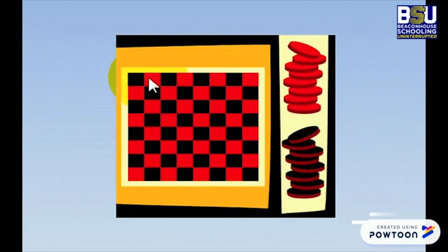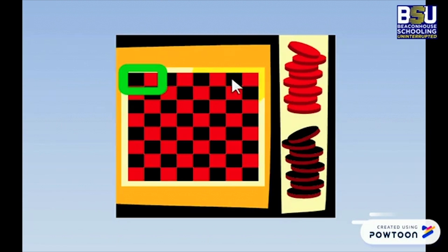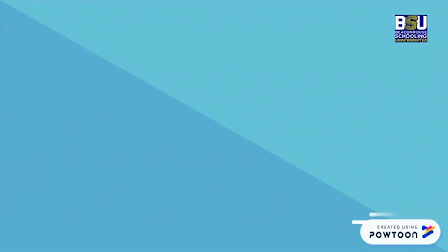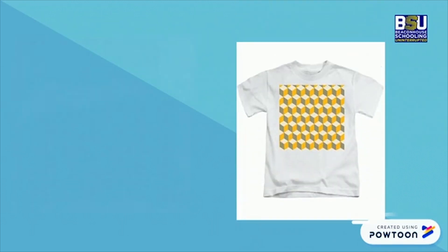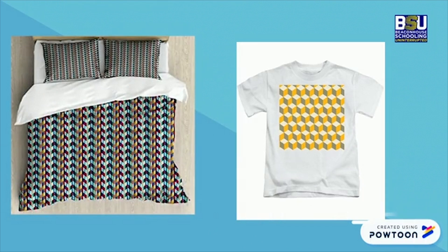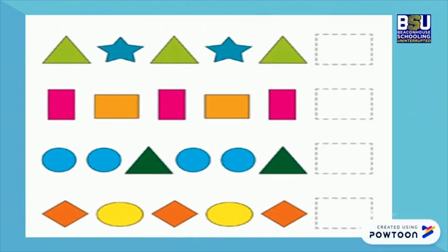Can you see the pattern here? Yes, that's right — black, red, black, red, black, red — it's repeating. Where else can we see patterns? Yes, in t-shirts and bed sheets!